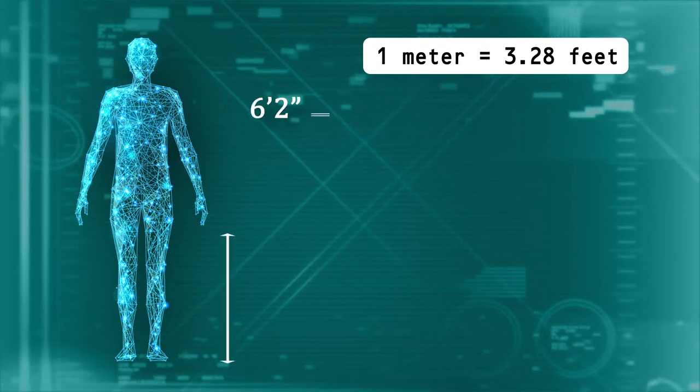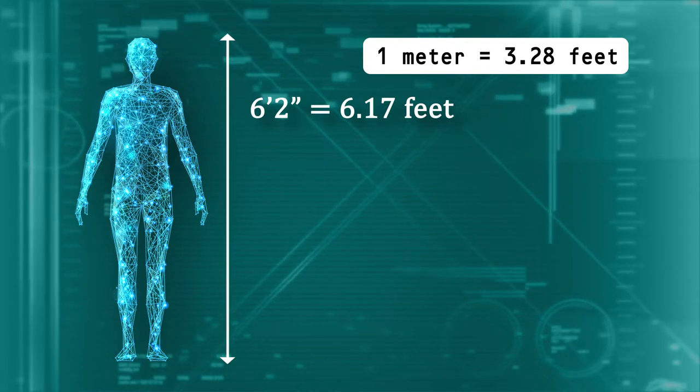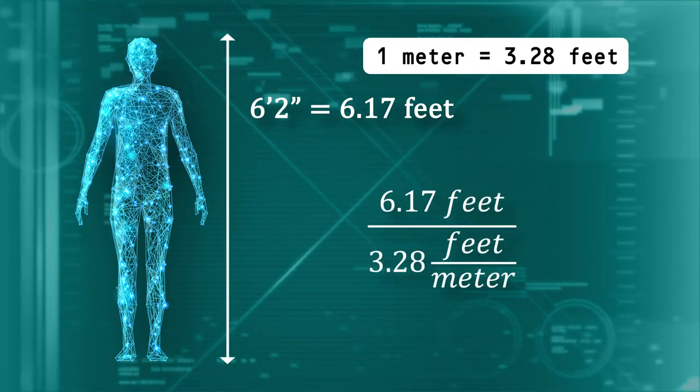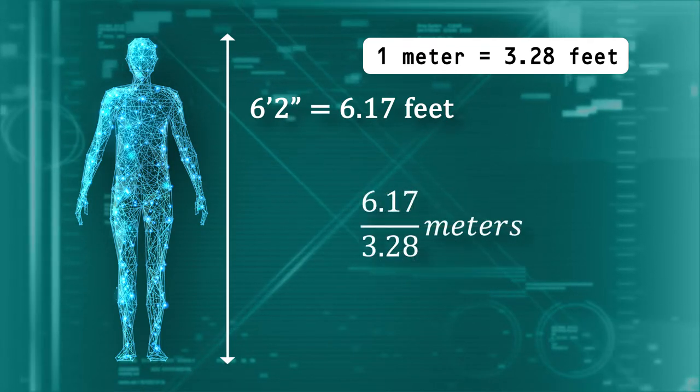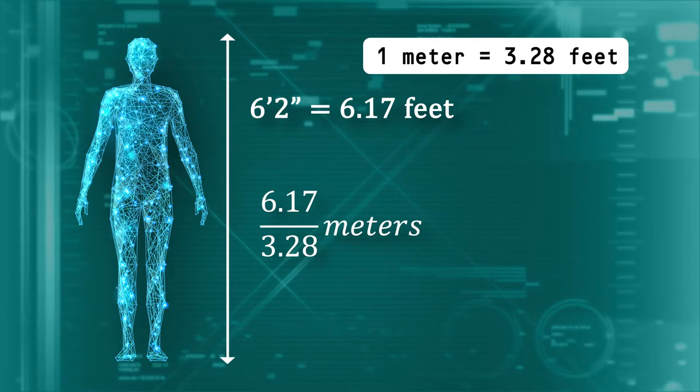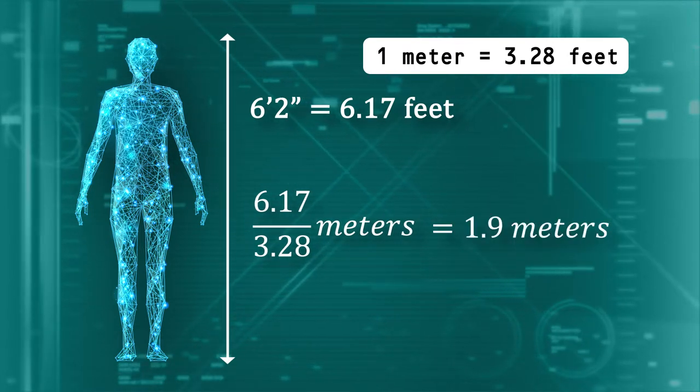For example, I'm six foot two, about 6.17 feet tall. To get that translated to meters, we divide 6.17 by 3.28, and that gives us a length in meters. In this case, I'm about 1.9 meters tall.